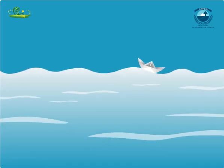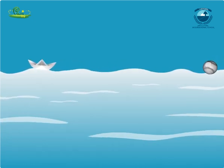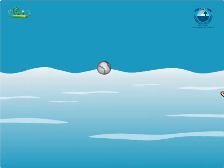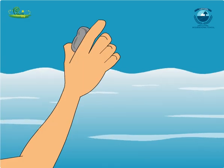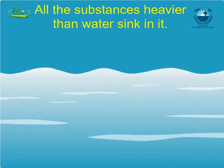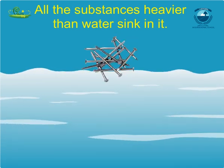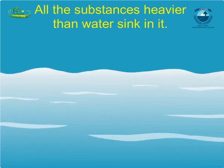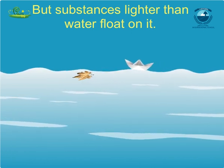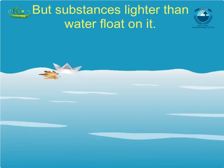Here goes my boat. Wow, it's floating. Oops, where is my ball? It is also floating there on the river. How will I get it back? Ronit, hit it with the stone. Oh, where has my stone gone? All the substances heavier than water sink in it, like a coin or a nail. But substances lighter than water float on it, like those dead leaves and my boat.